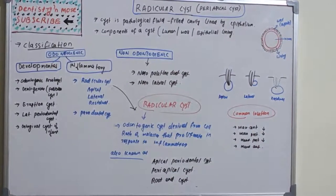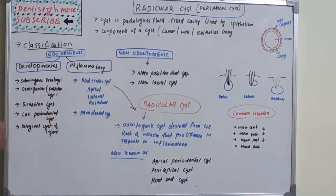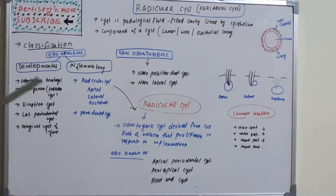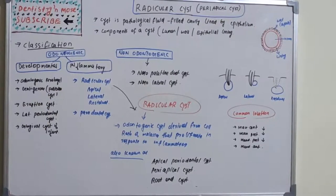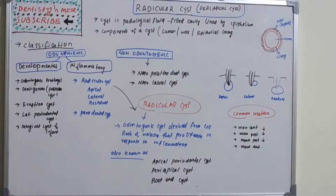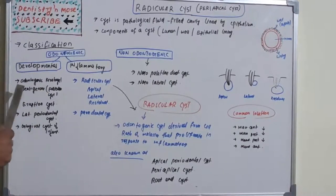Now we are moving on to classification. We have basically two types: odontogenic and non-odontogenic. Odontogenic is tooth-related, non-odontogenic is not tooth-related. Odontogenic cysts have two types: developmental and inflammatory. Inflammatory cysts result from inflammation, while developmental cysts result from developmental problems or processes.